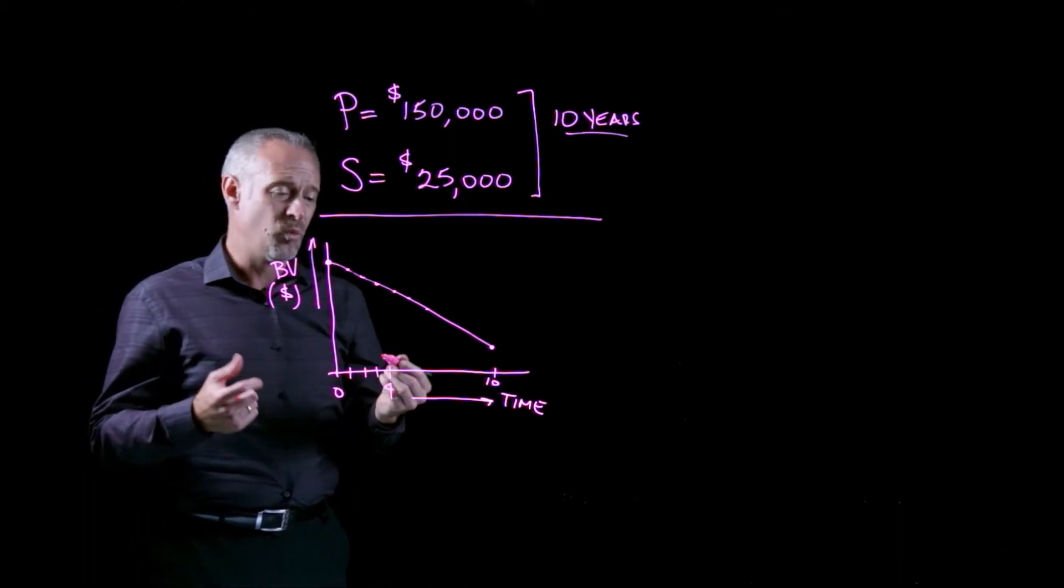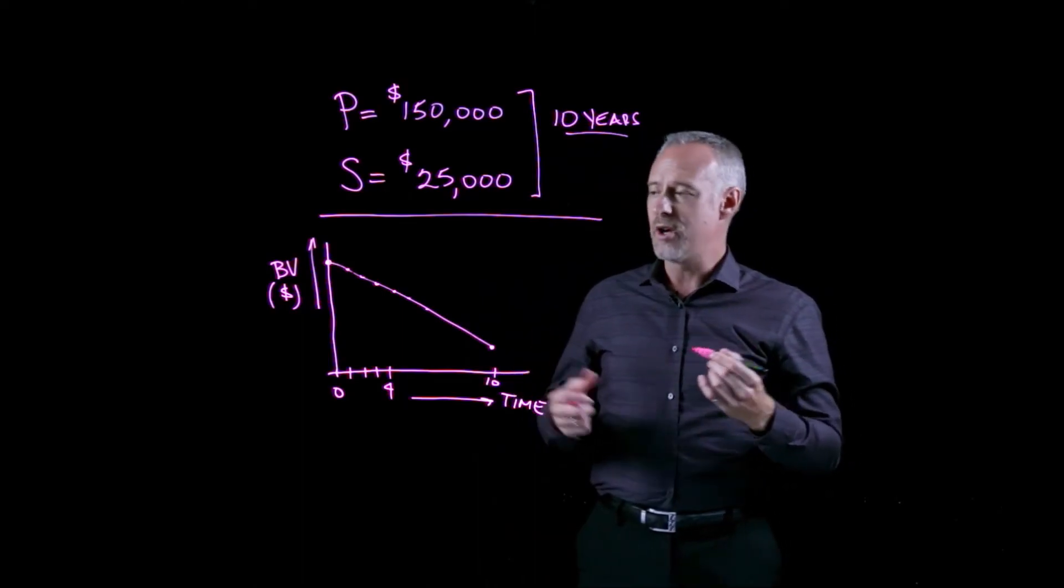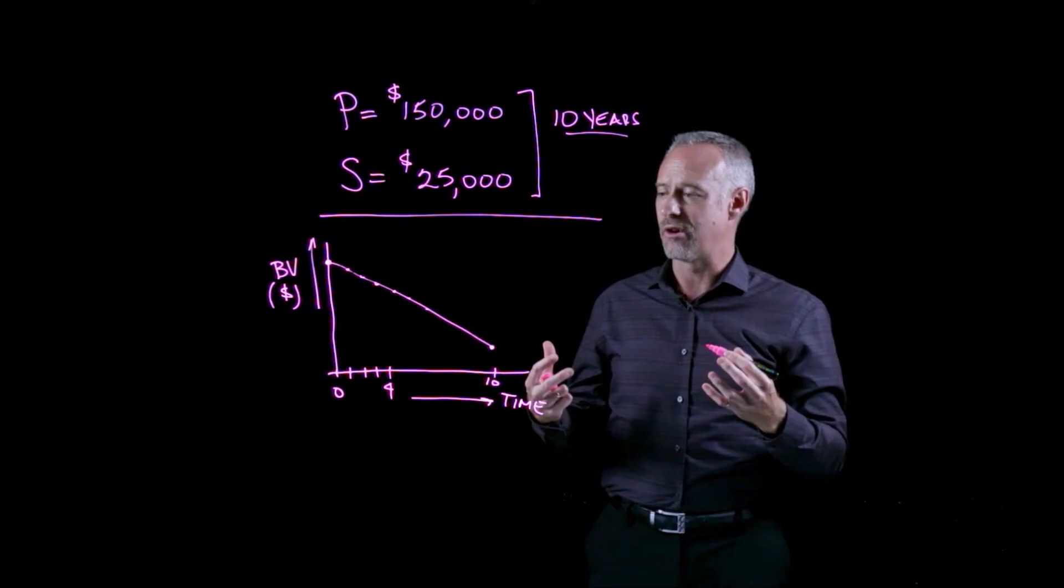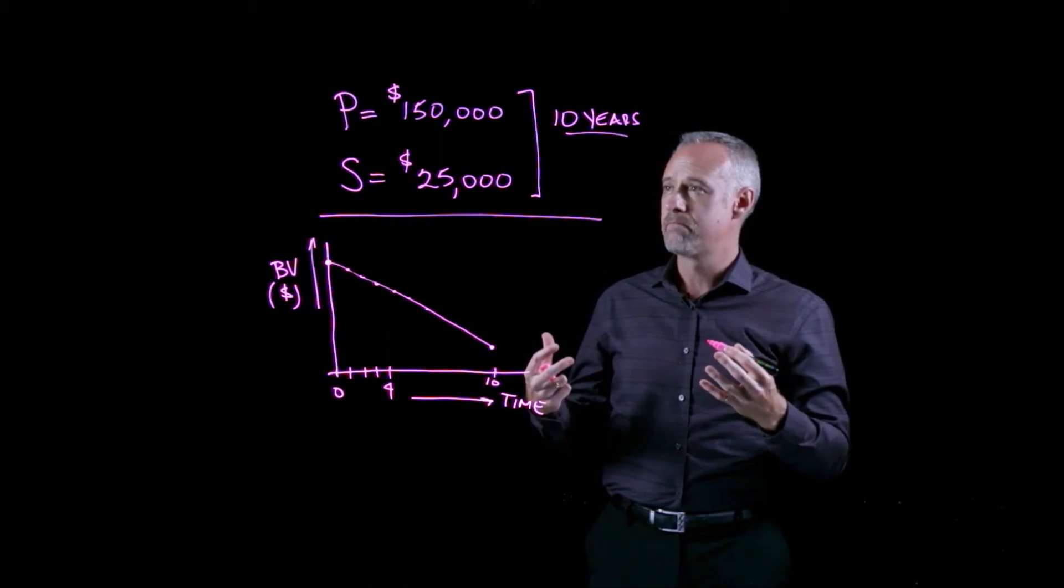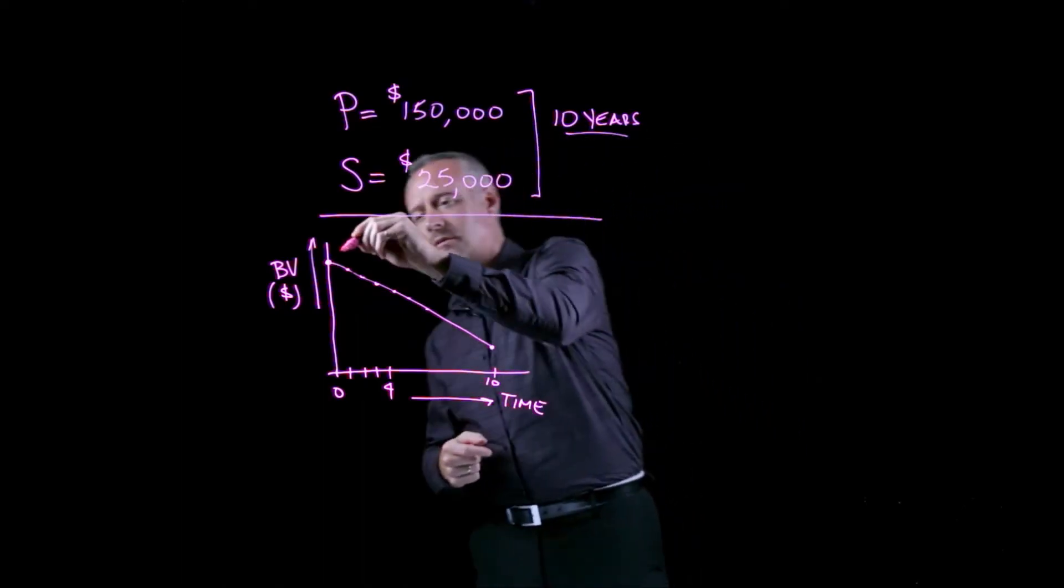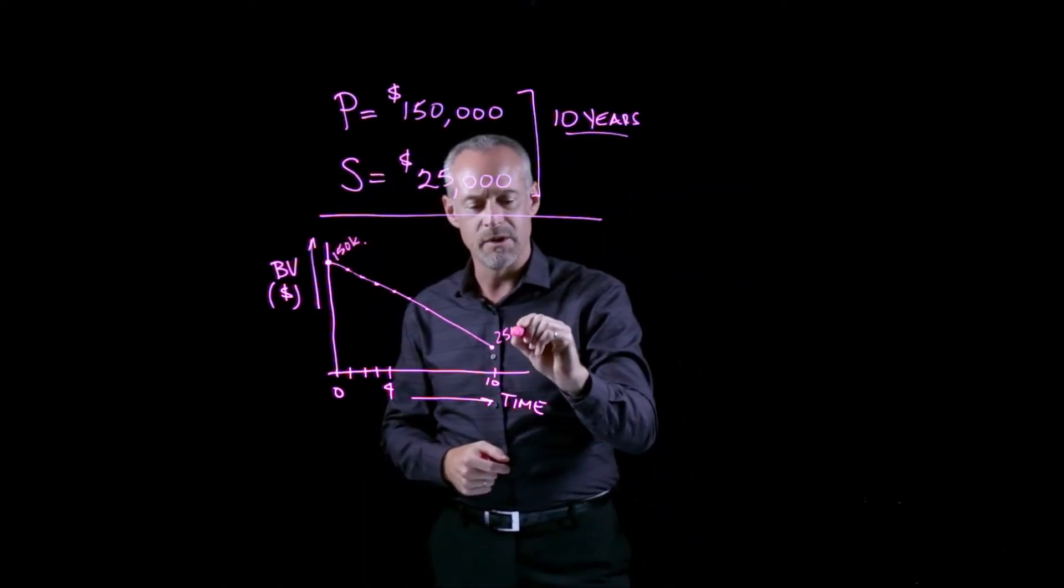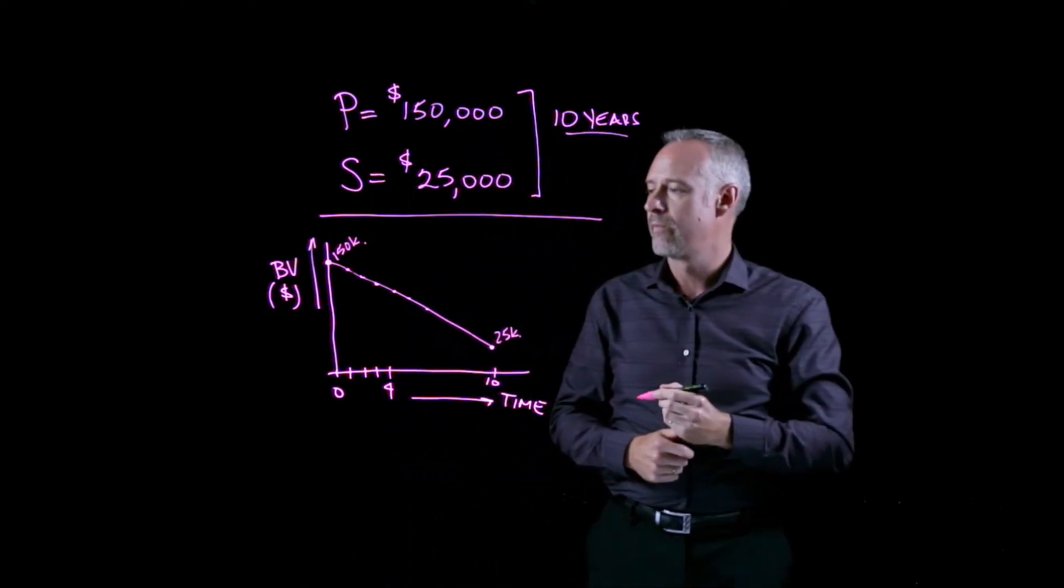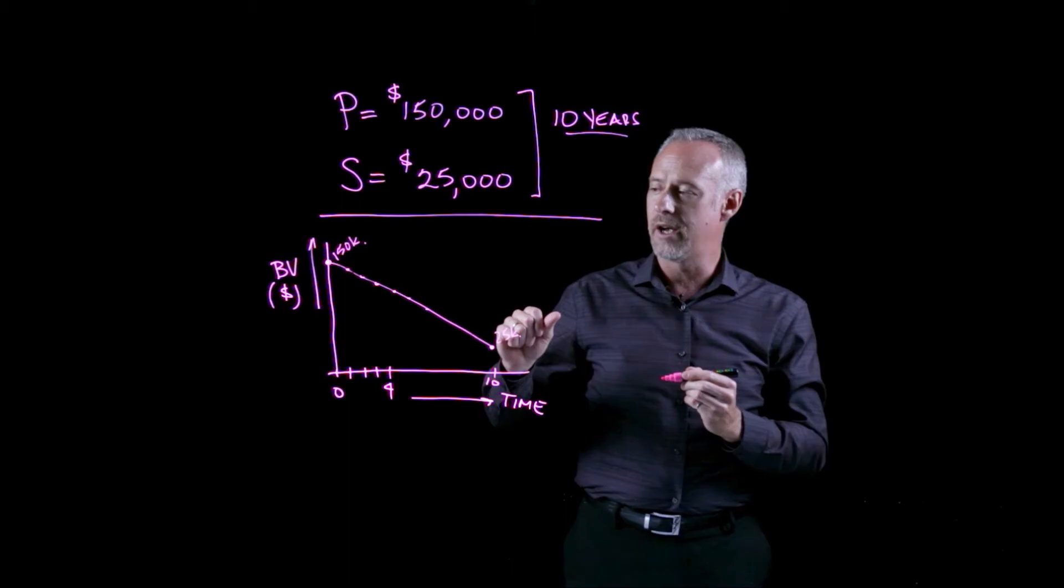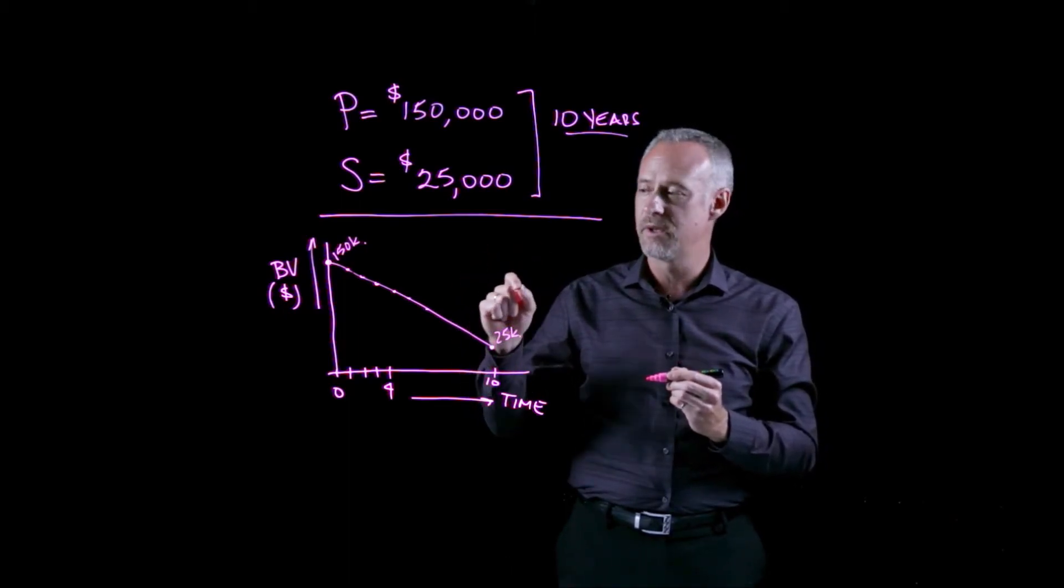Well, we don't need any kind of complicated time value of money equations to calculate this. Really, if we just think about it for a moment, we can say, you know what, if I have to go between a hundred and fifty thousand here and twenty-five thousand here, and I want to know how much the book value declines each year, or in other words, what is the depreciation expense each year?